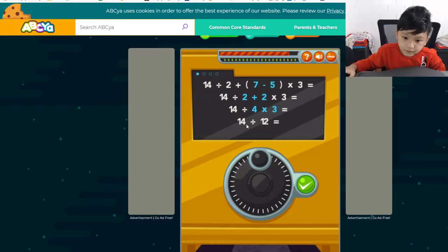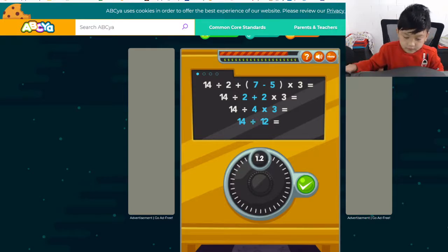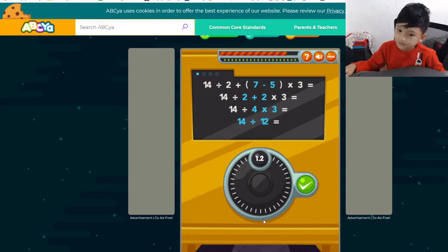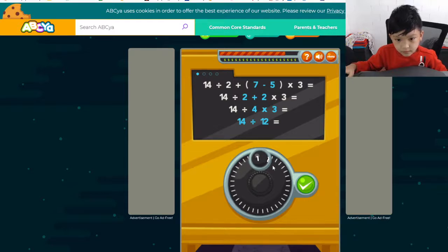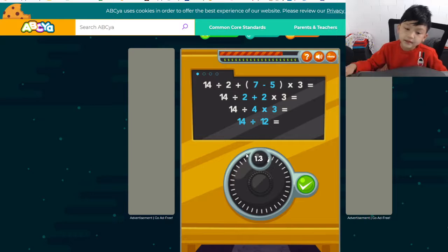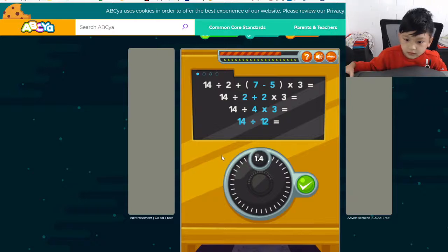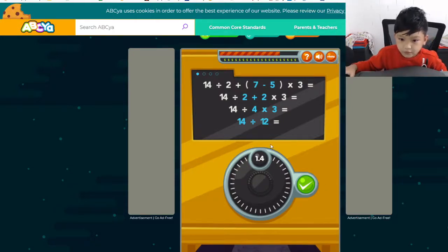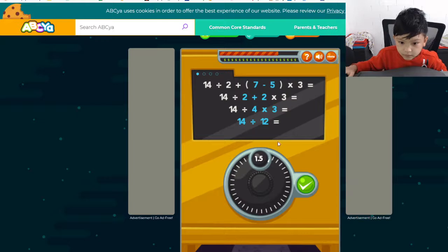Ready? Fourteen divided by twelve. Fourteen divided by twelve. One point two. I don't really know. It's not one. Hmm. What times twelve equals fourteen? I know. Maybe it's this. Nope. Nope.